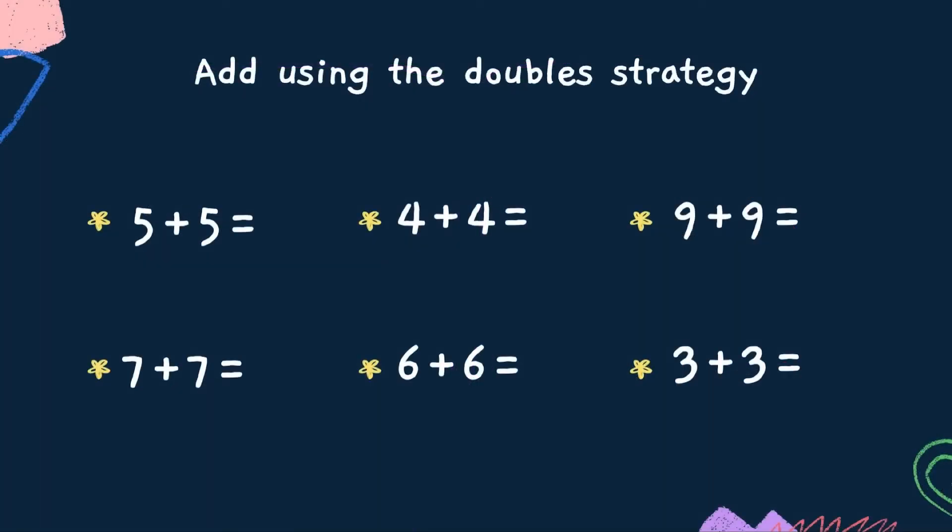Let's practice adding using the doubles strategy. Remember, keep looking at the doubles chart and you will get superb at it. What's 5 plus 5? 5 fingers on one hand. 5 fingers on the other. 5 plus 5 equals 10.